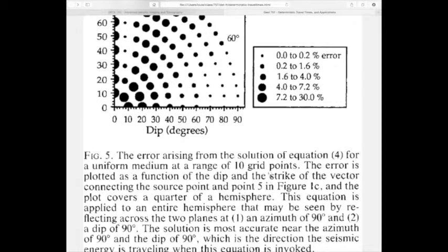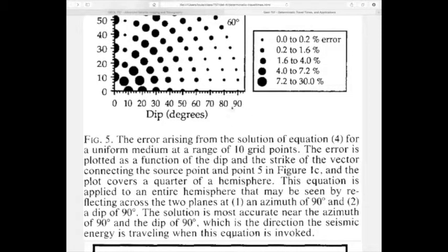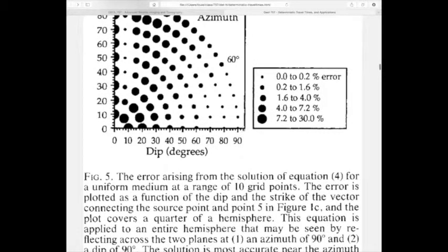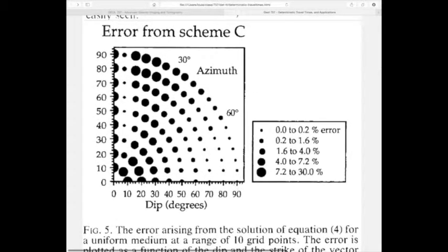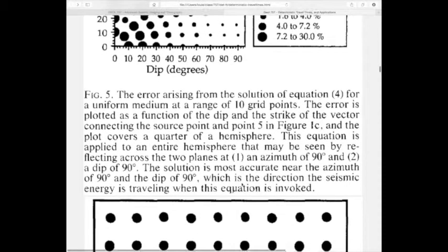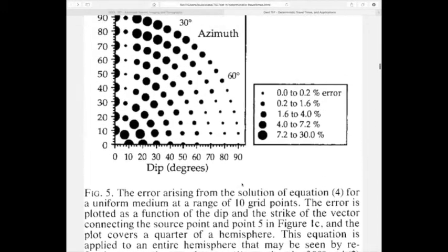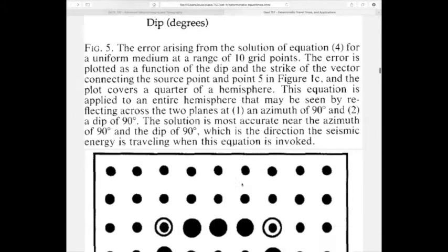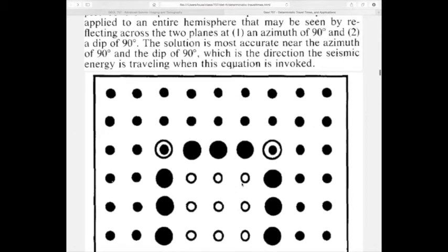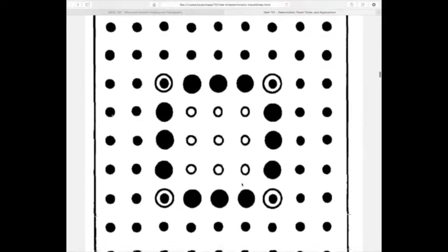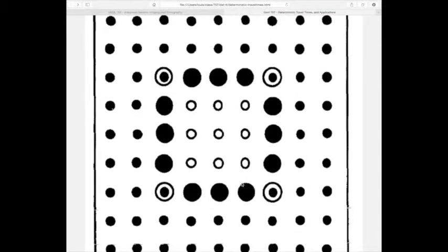The other schemes — face centers — can have much larger errors. Going horizontally or just off vertically they can be about 1%, but at the wrong azimuth or dip you can get 30% error. So you want to only invoke those schemes when appropriate — for instance, scheme C only at 90-degree dip. When the dip of the ray is changing rapidly, the algorithm can invoke the wrong scheme and go bad.